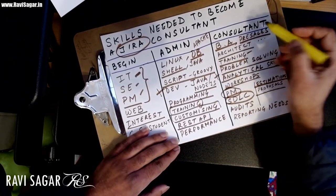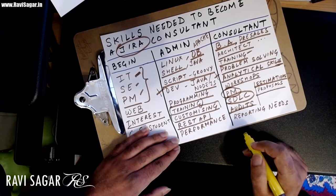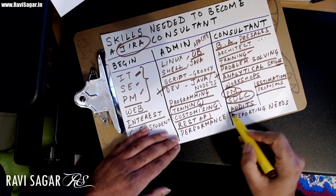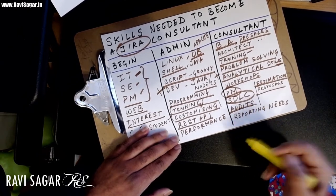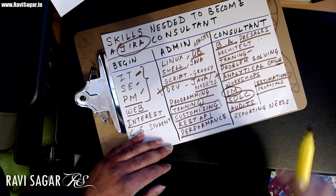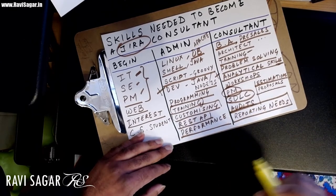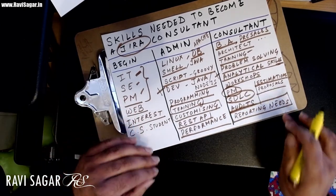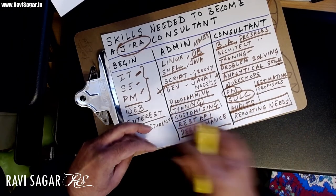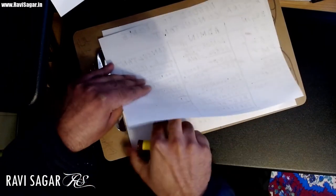Other consultant activities include auditing. If a Jira instance has been running in an organization for a few years, they might ask you to review their Jira configurations and processes — audits covering not only Jira configurations but also performance aspects. Reporting is also important: people use Jira for issue tracking but they also need to report on it because reports drive decisions. Having a good understanding of the various kinds of reports people can generate using Jira is very valuable.